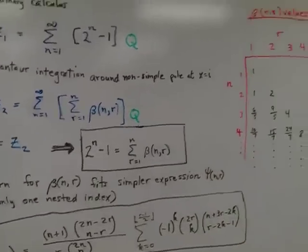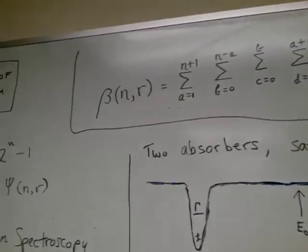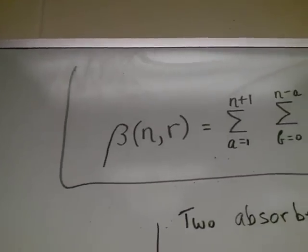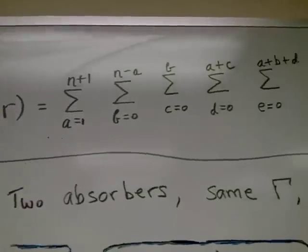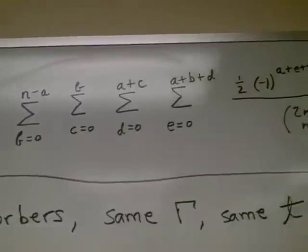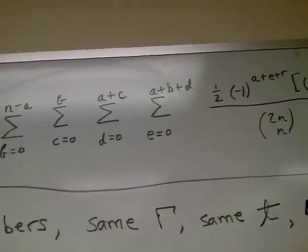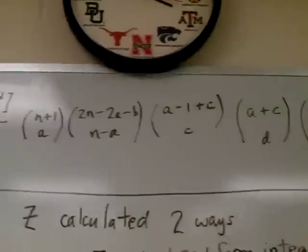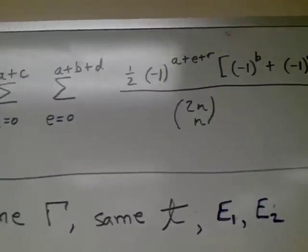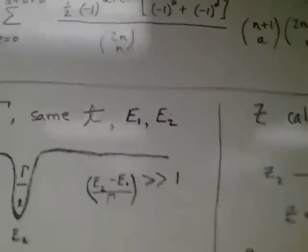Now beta itself has a very complicated structure that came out of the contour integration. It's a five-fold nested summation over five indices of a product that involves six binomial coefficients in the numerator and one in the denominator. So it's very complicated.